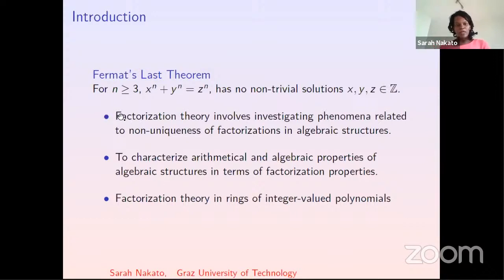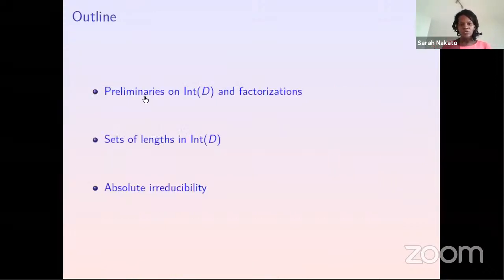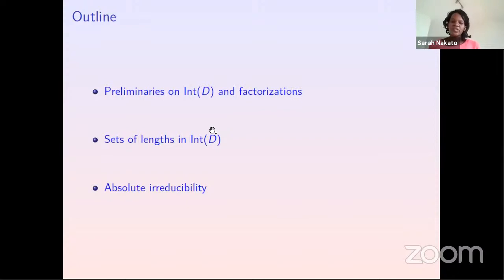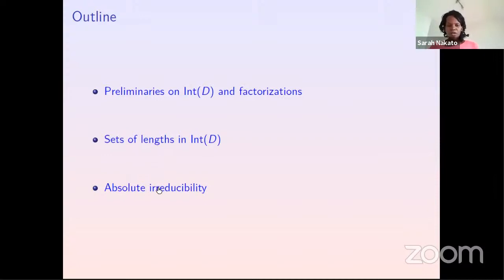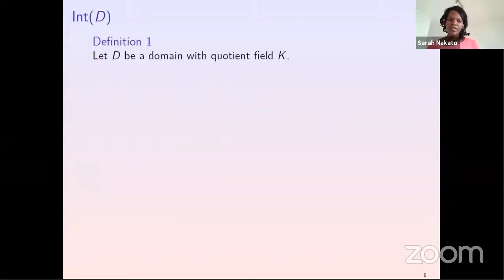Today we are focusing on factorization theory in rings of integer-valued polynomials. We shall get to know what Int(D) is and also some factorization terms. Then we shall look at sets of lengths in Int(D) — this is the most standard invariant in factorization theory, and from it we get other invariants. Then we shall finally look at absolute irreducibility.